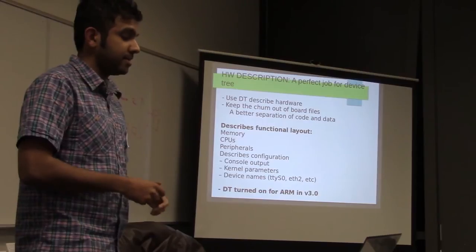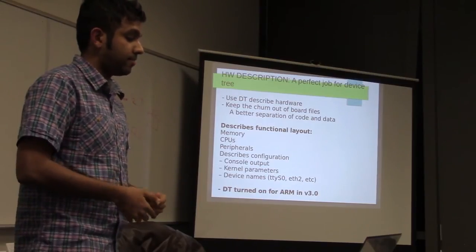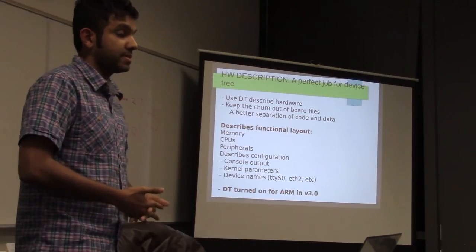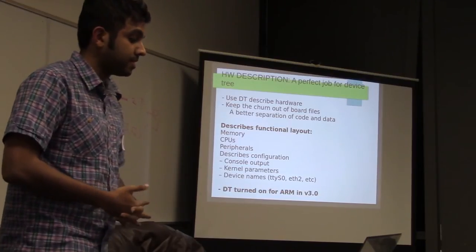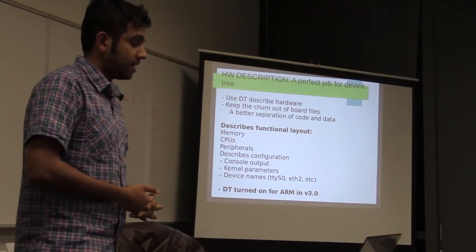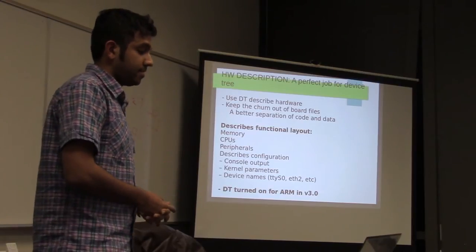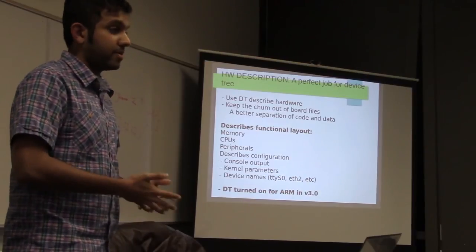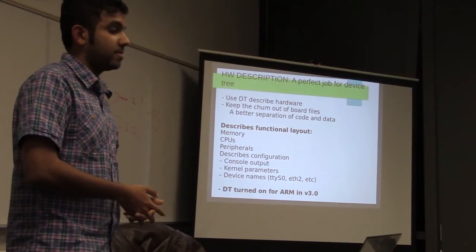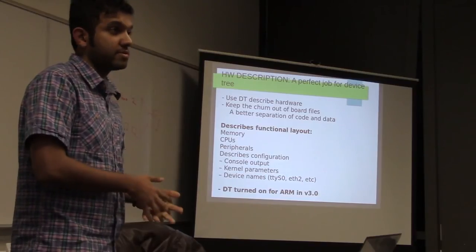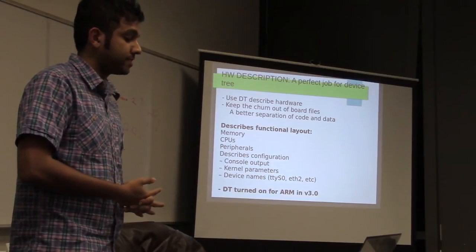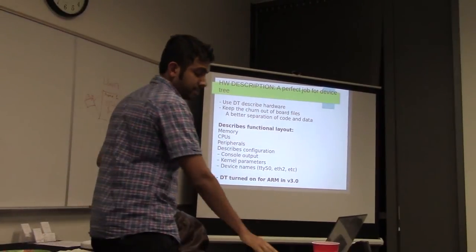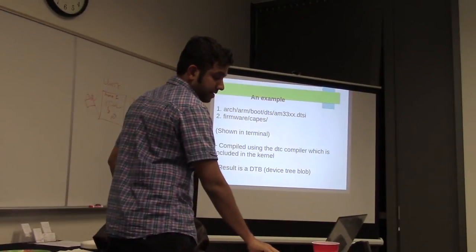Device tree is also used to specify configuration — serial port names, kernel boot parameters, and similar things. For ARM, device tree support was turned on in kernel version 3.0. Before that it was available on other platforms like PowerPC, but for ARM it's been in use since v3.0.